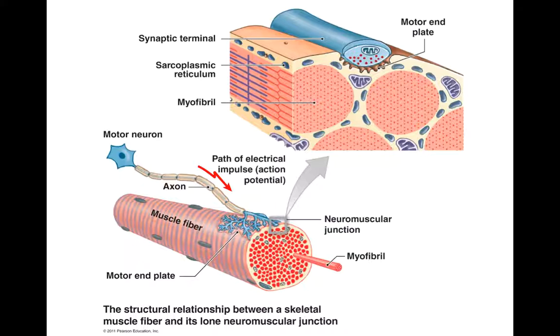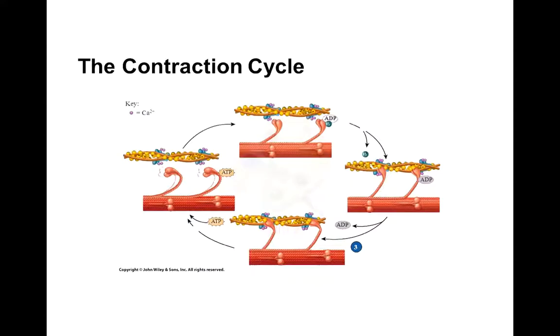Then once this happens, we are going to move on to the contraction cycle where the muscle contraction takes place. So now you know that the sarcoplasmic reticulum released those calcium ions. Now what do those calcium ions do?